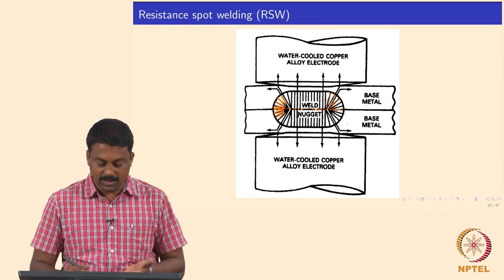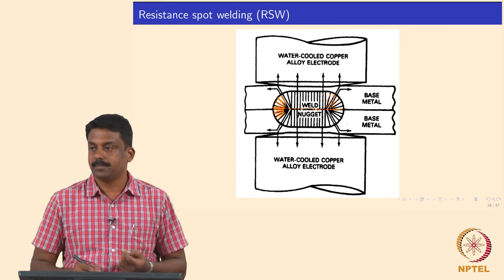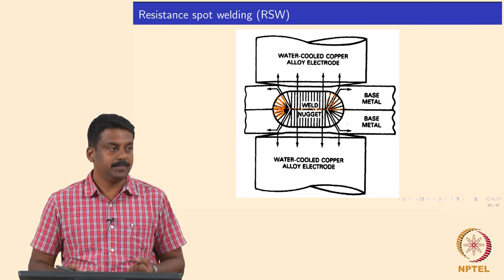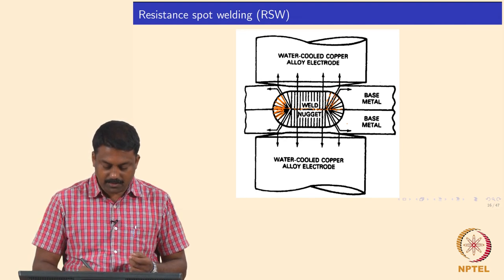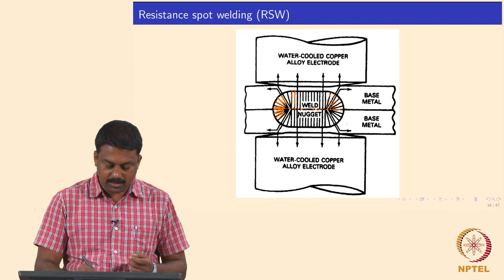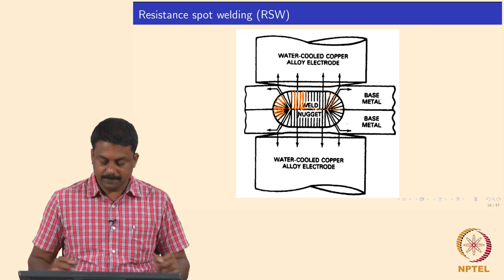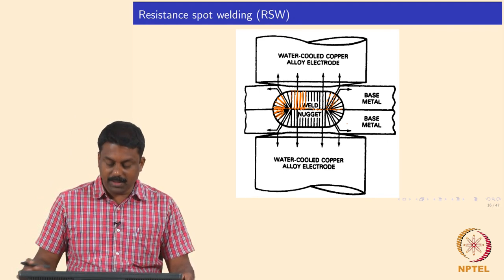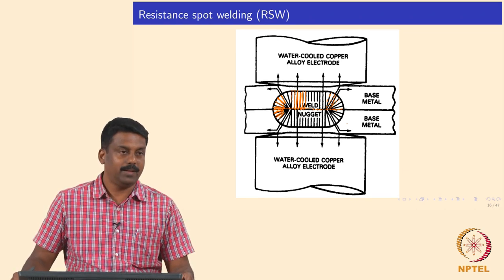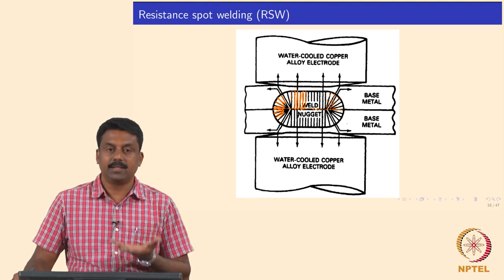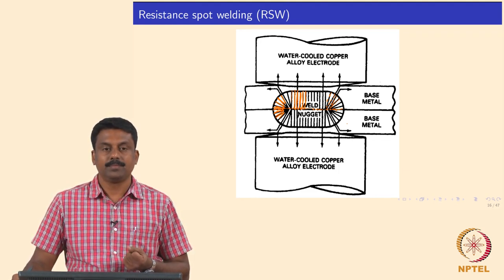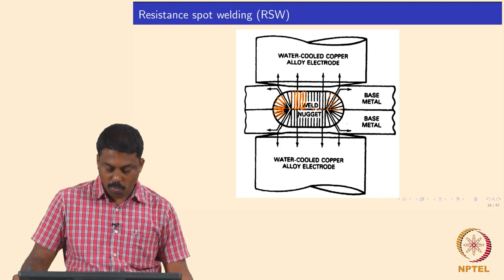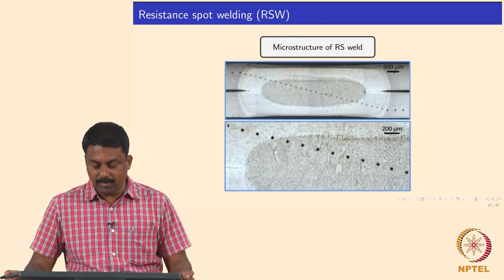For low carbon or simple steel there is no problem because segregation is not significant. But the moment you increase the alloying elements, you end up making the weld brittle because of centerline segregation due to the solidification pattern — always columnar growth from the fusion boundary towards the weld centerline, because that is how you extract the heat. Both the segregation and the applied load influence cracking in some alloys.